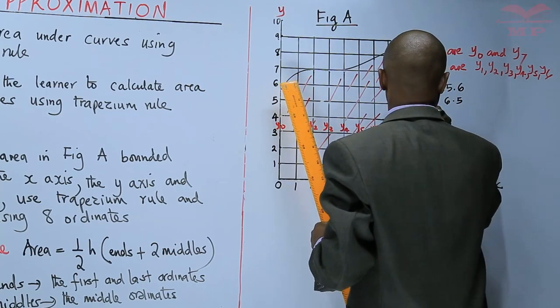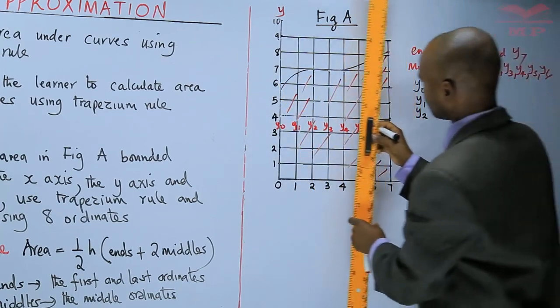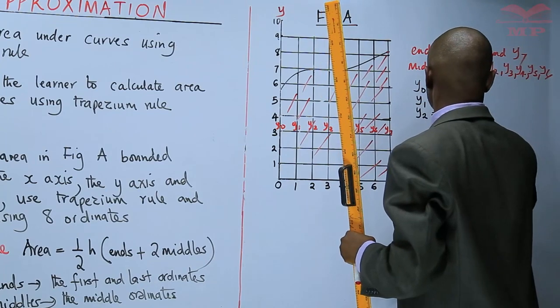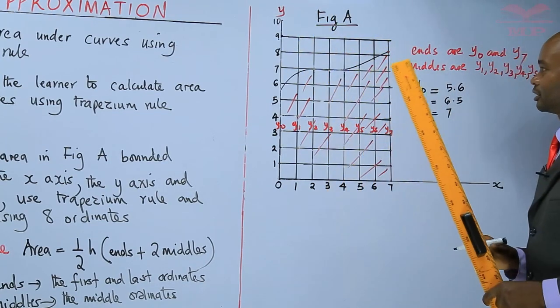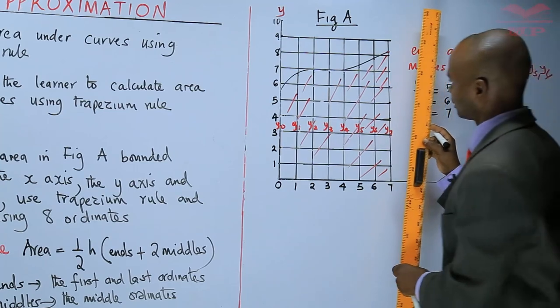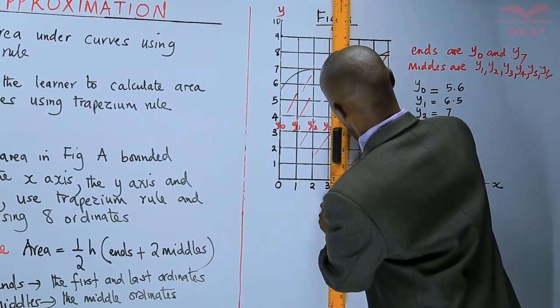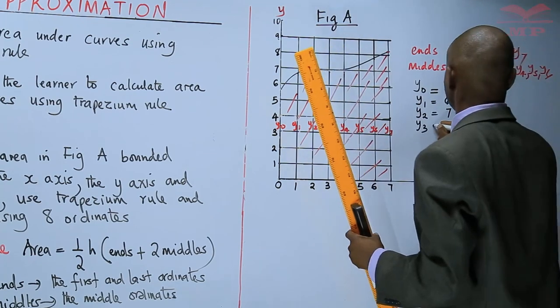Come to y2. y2 is actually 7. y3 strikes 7 again.